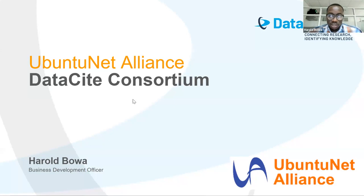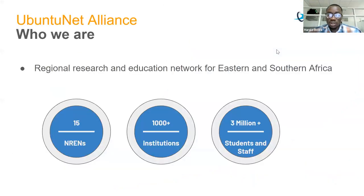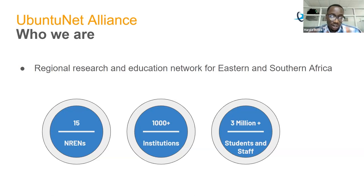Let me introduce Ubuntu Net Alliance. Ubuntu Alliance is the regional research and education network for Eastern and Southern Africa — the member organization for national research and education networks within the region. Out of 26 countries, we have established and enrolled 15 member NRENs into our membership, 14 of which are connected to our network. We benefit 1,000 plus institutions throughout that region, and those institutions benefit 3 million plus students and staff.